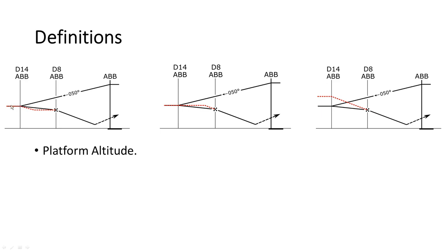You can either do a shallow descent initially or dive down to the final approach altitude. Either way, the platform altitude will be this altitude. In one case, you fly level at the platform altitude, overfly the descent point, and fly a continuous descent after. In another case, in order to fly a continuous descent, you fly at the platform altitude somewhat higher and start the descent at the published point.